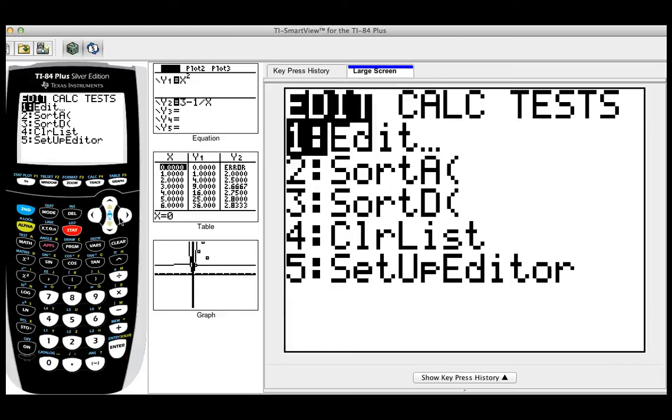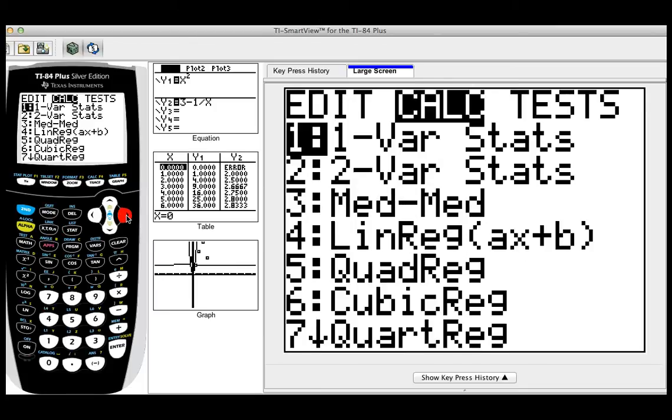Then I can click on stats again, and look what's going to happen. You can go ahead and go to CALC and just go to the linear regression, which is number four.